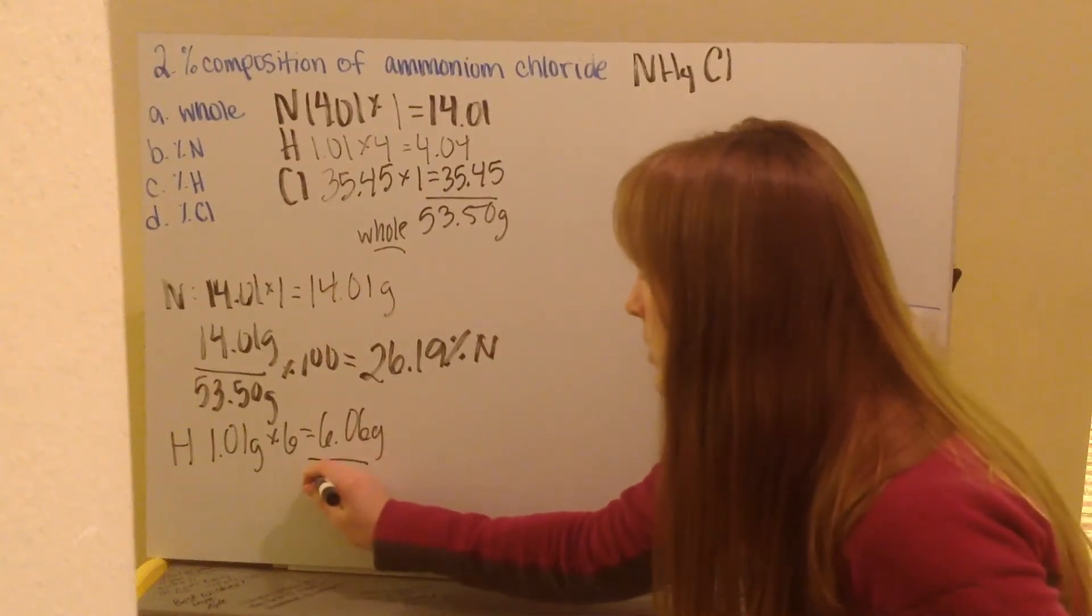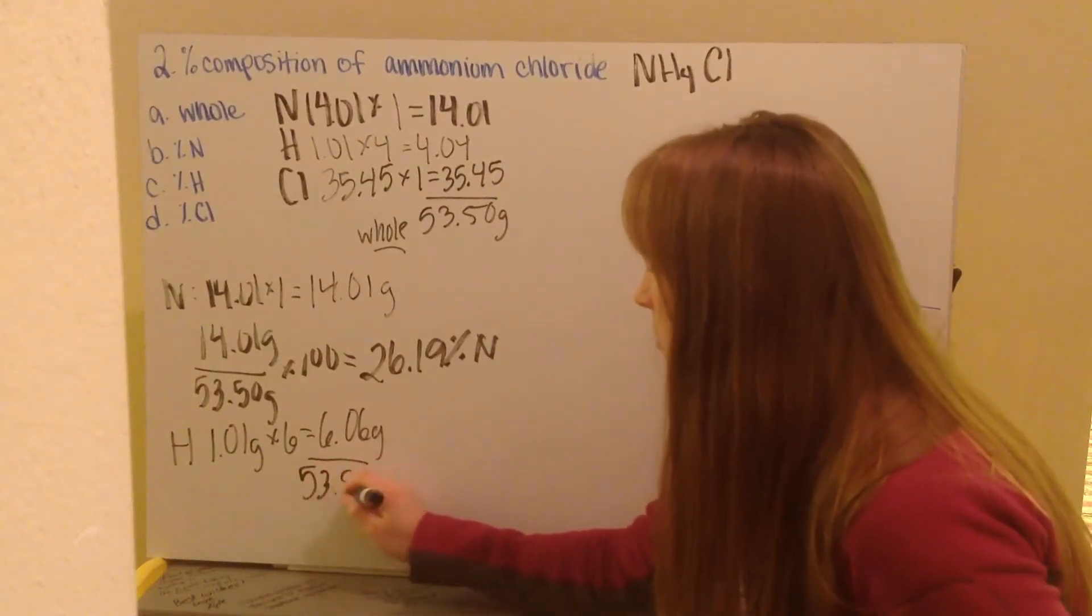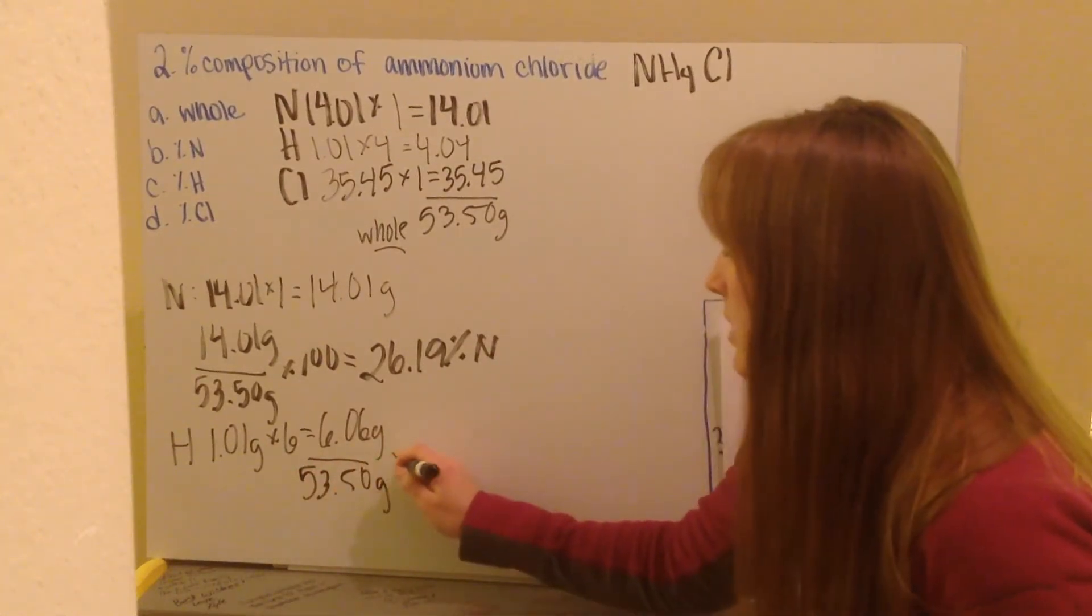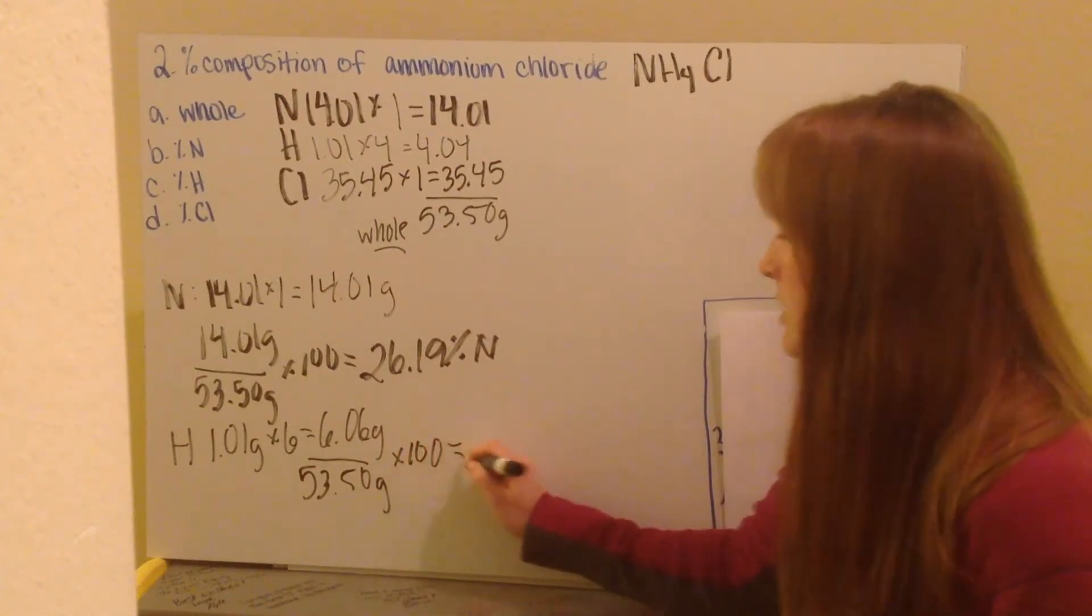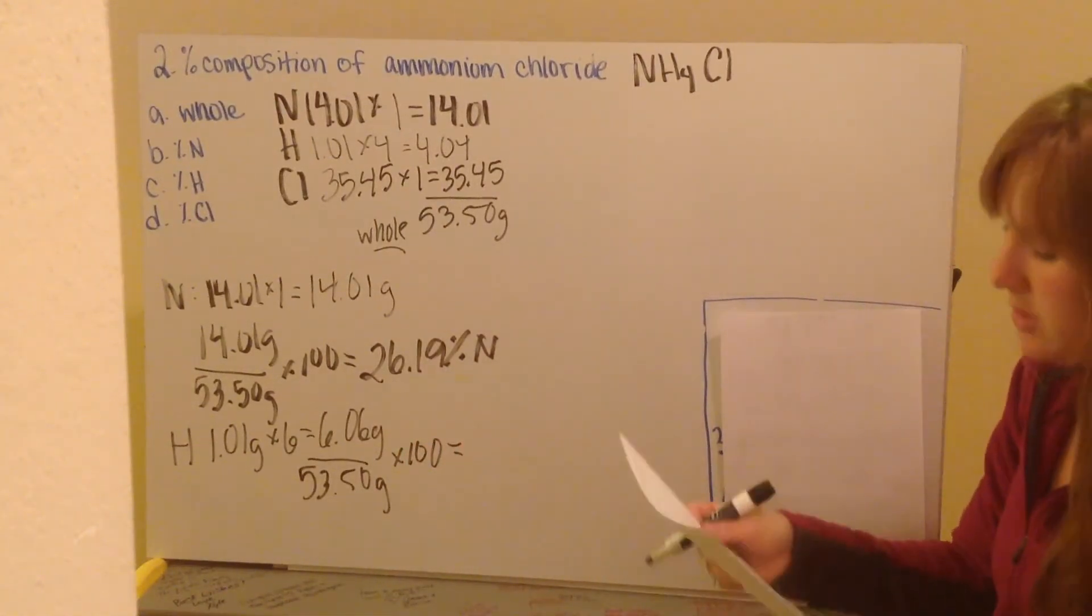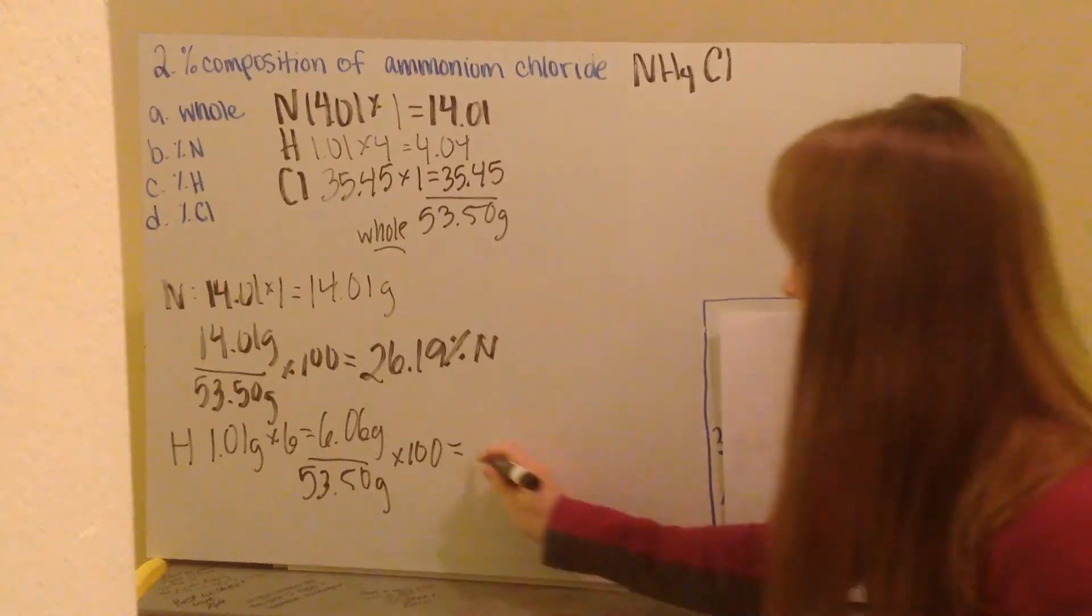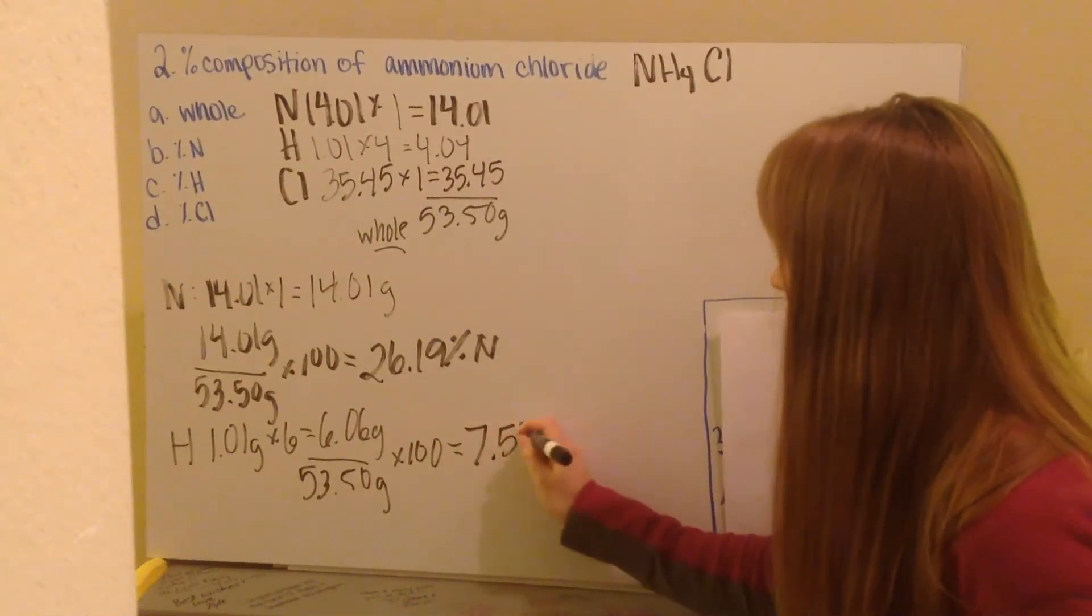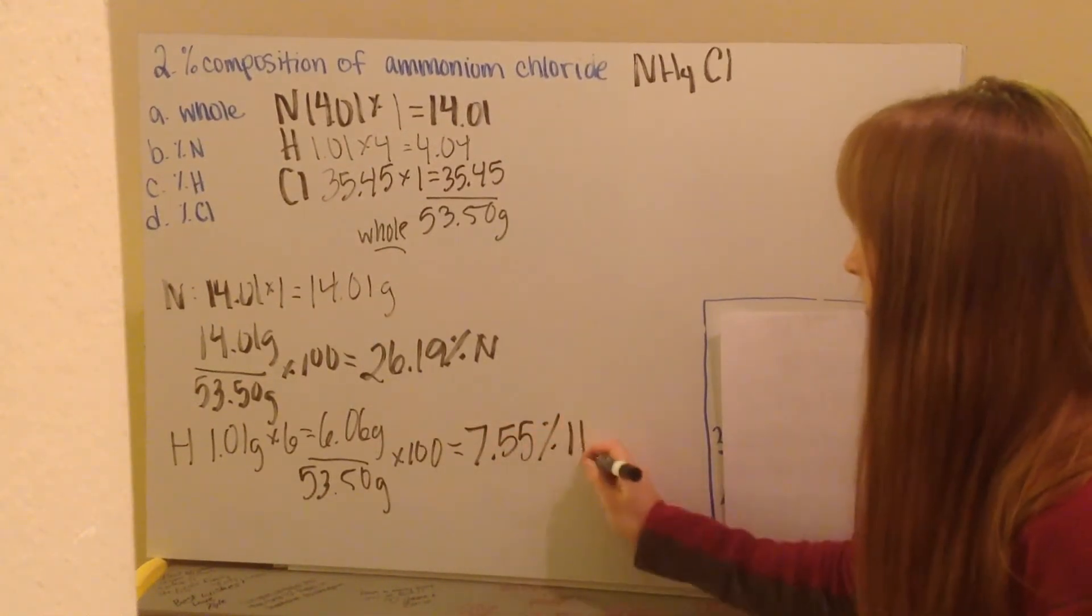This gives me a percent composition of hydrogen to be 7.55% hydrogen.